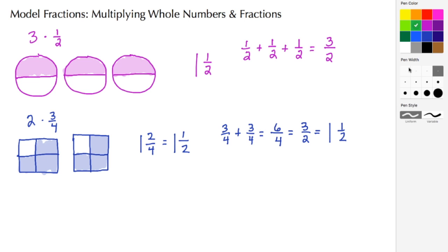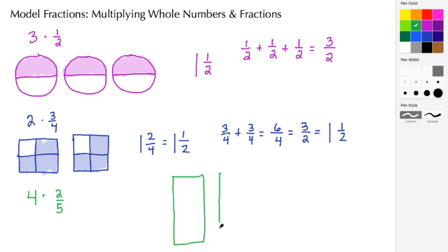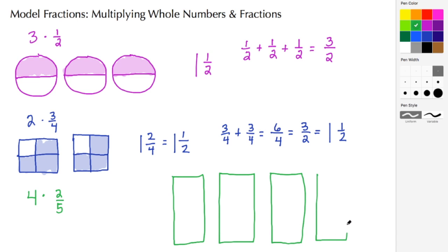For our last example, we're going to do four times two-fifths. This time we're just going to do some rectangles, so we're going to create four rectangles. Our fraction is two-fifths and the denominator is five, so each one of these rectangles needs to be broken up into five equal pieces. We do that by drawing four horizontal lines in each one.